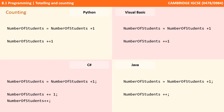However, we can perform the same thing by typing less. So in Python and Visual Basic we can say: number of students plus equals one. There are similar concepts that can be used in both C-sharp and Java, shown on the screen.